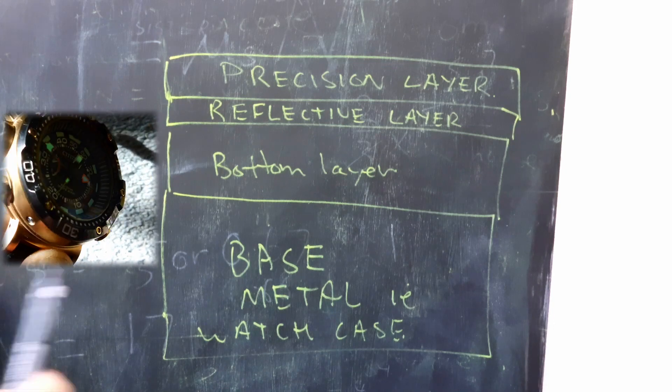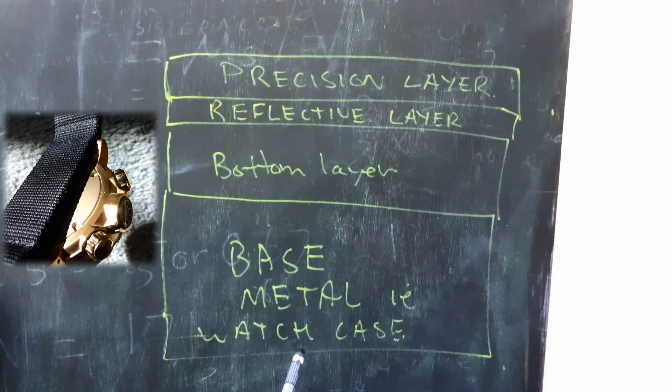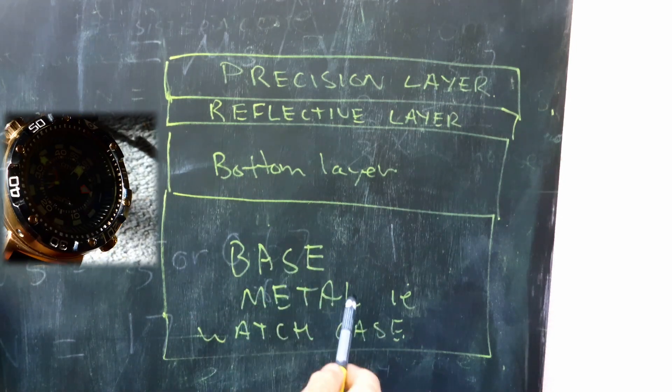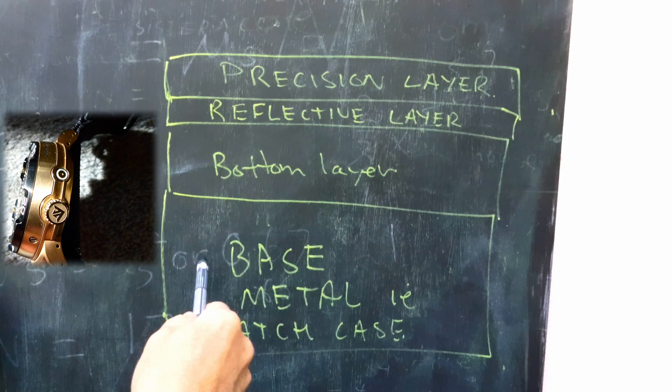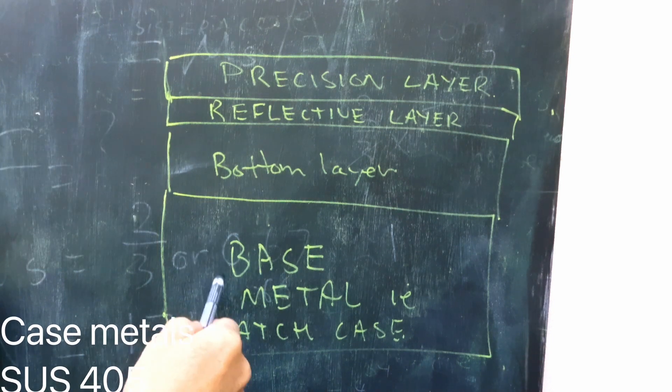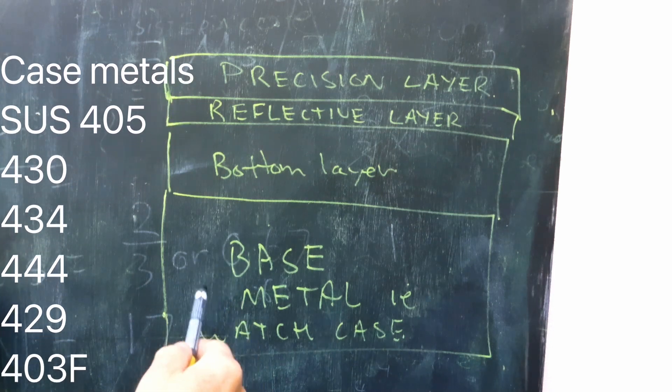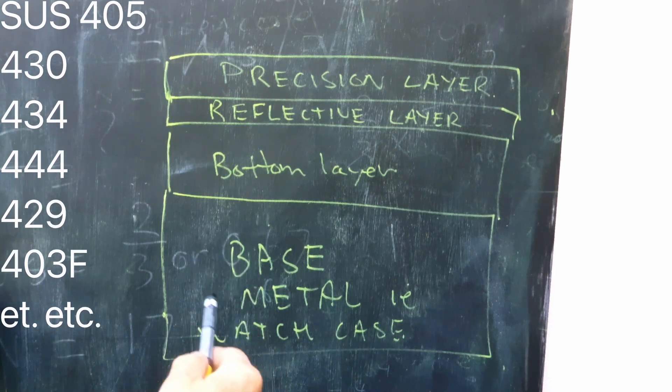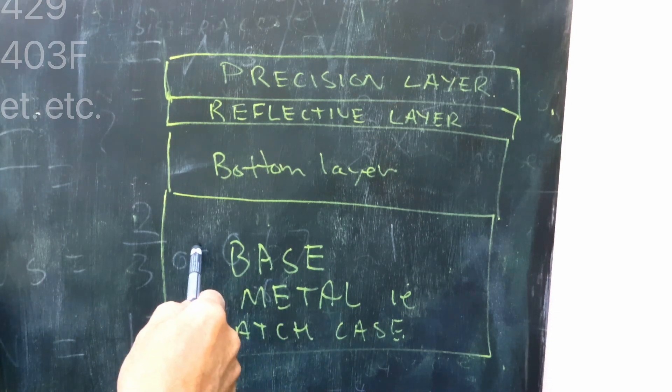So here's a schematic of a cross-section through a watch. This is the base metal which is the watch case, and that could be comprised of any number of stainless steel alloys if the watch is made from stainless steel, and most watches are these days. That could be SUS 405, 434, 344, 429, 403F, etc., so all sorts of stainless steels.